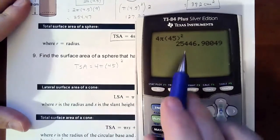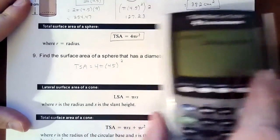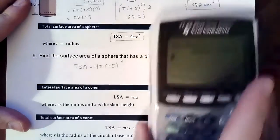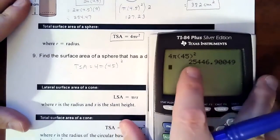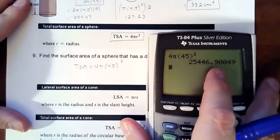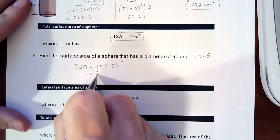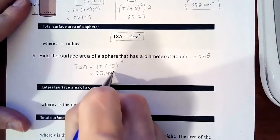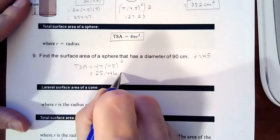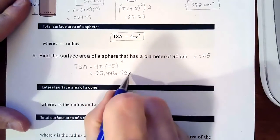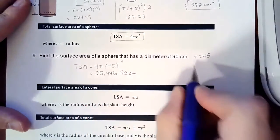So we get 25,000. And if it doesn't tell us where to round, we're going to go to two decimal places. So 25,446.90 centimeters squared.